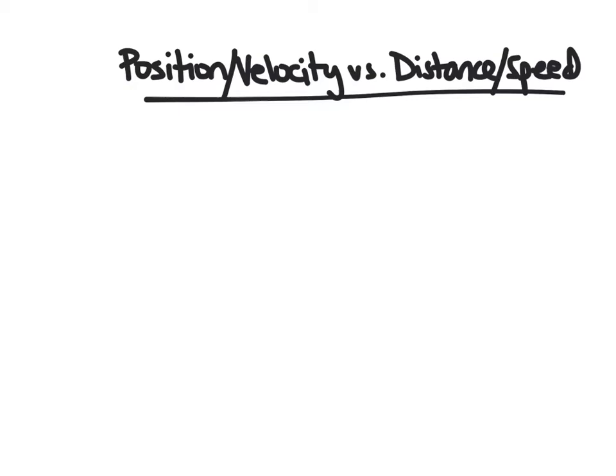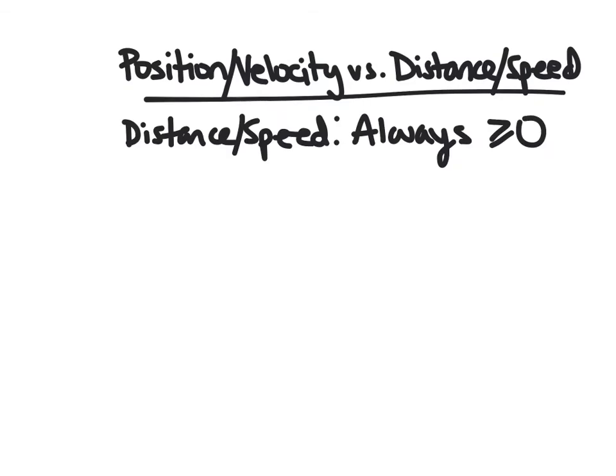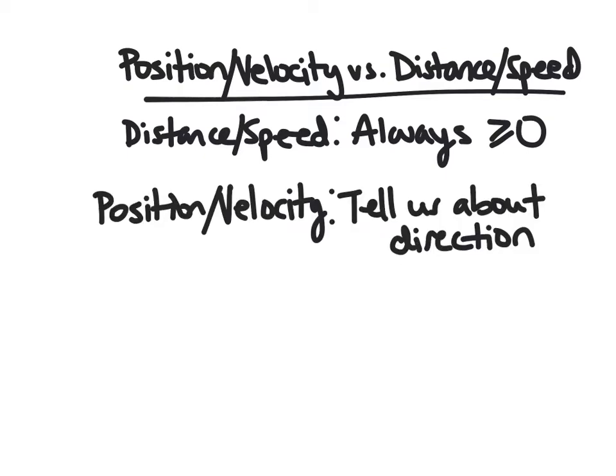So the first thing I want to talk about in terms of velocity is why we choose the terms position and velocity instead of distance and speed and actually distinguishing between these things. So if you think about when you're talking to someone about how far you've gone, you never say I went negative miles, right? A distance traveled is always non-negative. Same with speed. You read your odometer, it does not have negative numbers on it. So that is what distance and speed is talking about. It's always non-negative.